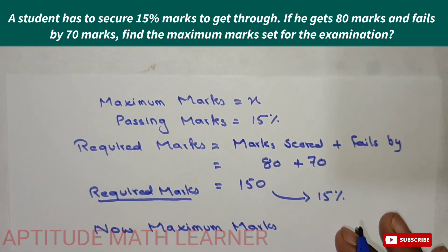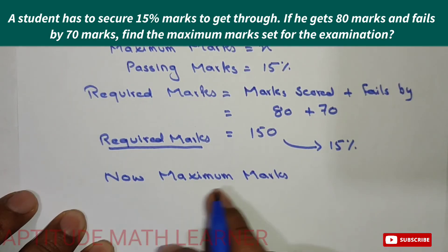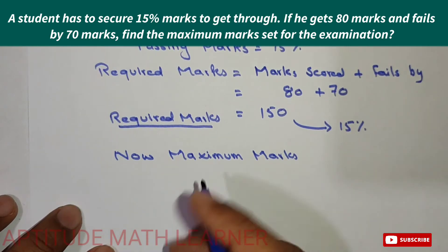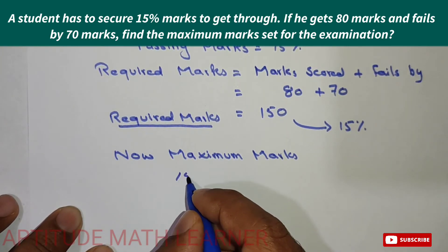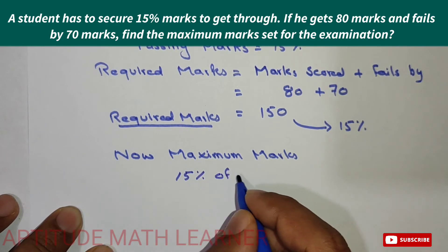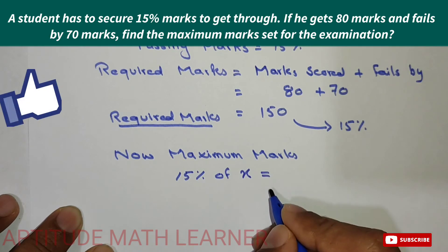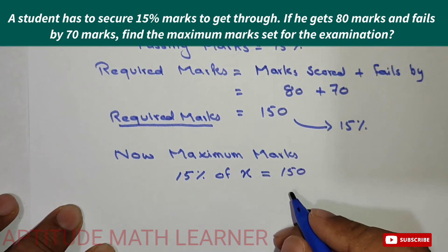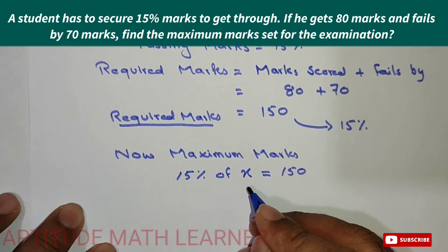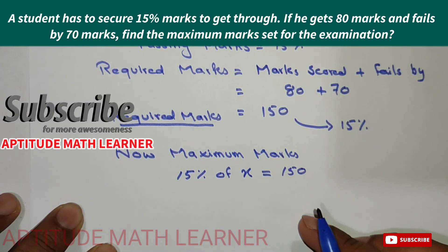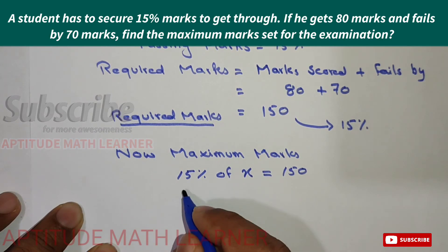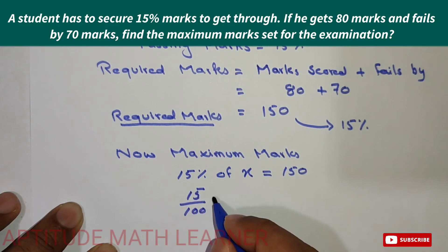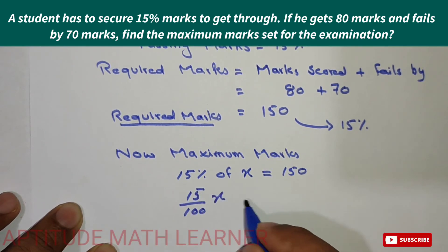We have taken the maximum marks as x. So, 15 percent of x equals 150. That is 15 divided by 100, multiplied by x, equals 150. I hope up to here you have completely understood.